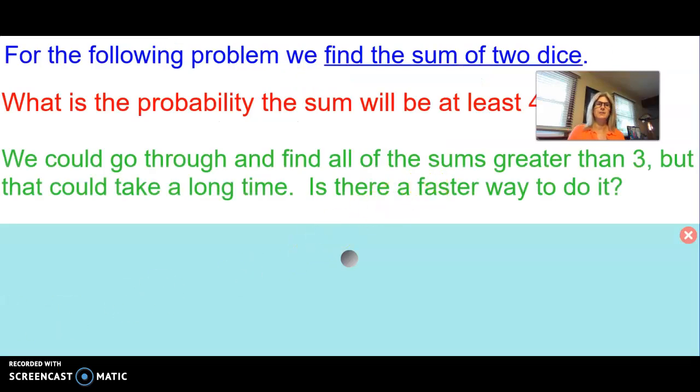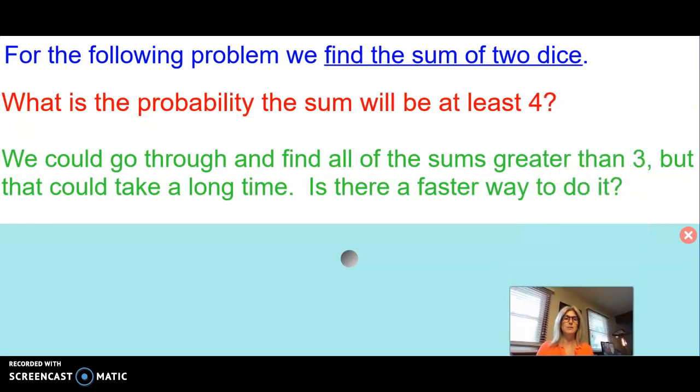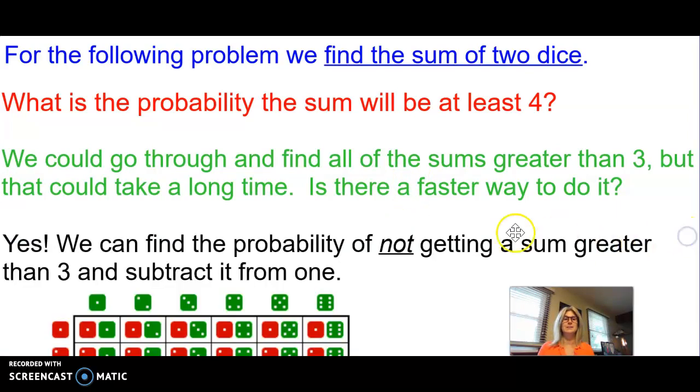Let's do an example. For the following problem, we're going to use two dice. What is the probability that the sum will be at least 4? Stop and think about that. At least 4 means we can have a sum of 4, 5, all the way up to 12. That's a lot to find out. We could do it, but it might be quicker to do it by the complements. We could go through and find all the sums greater than 3, but that would take a very long time. It's faster if you do it a different way.